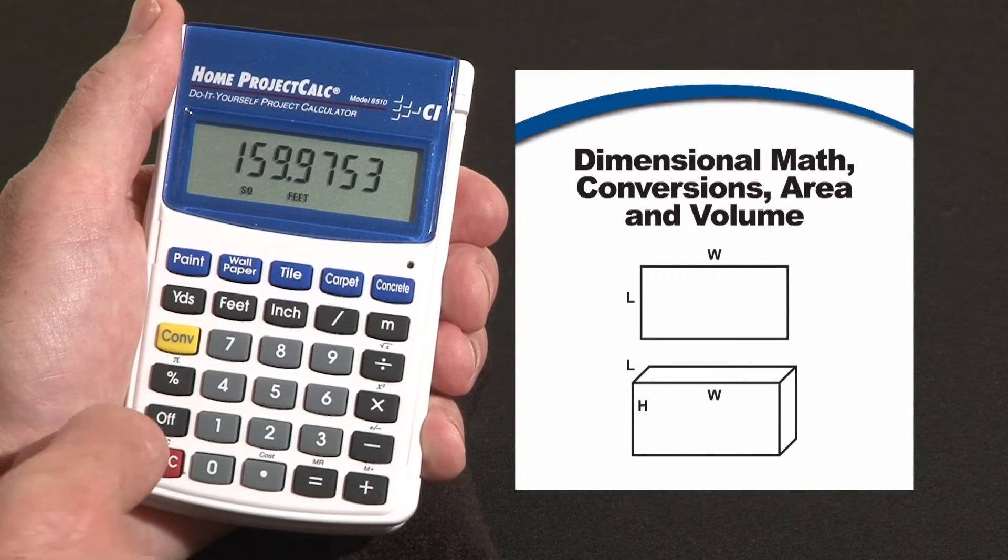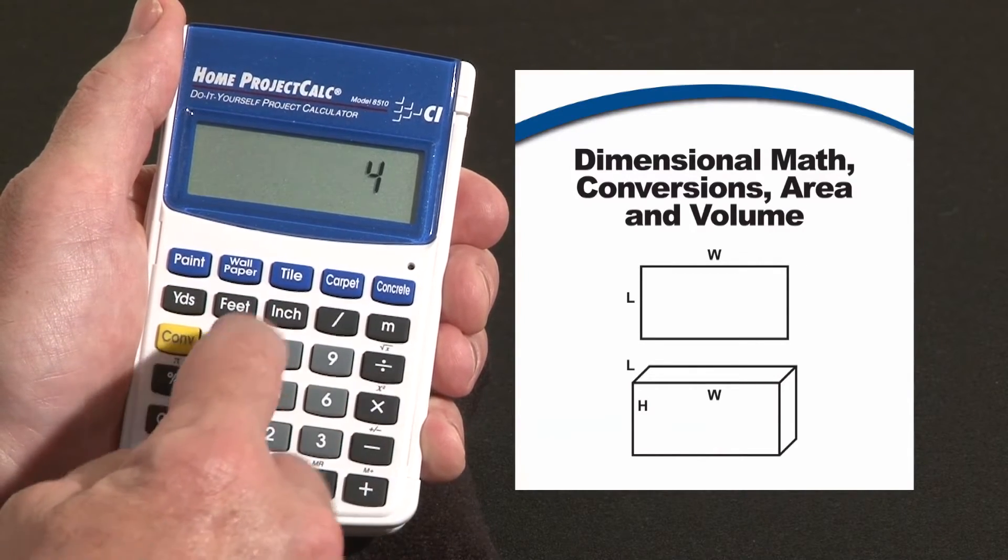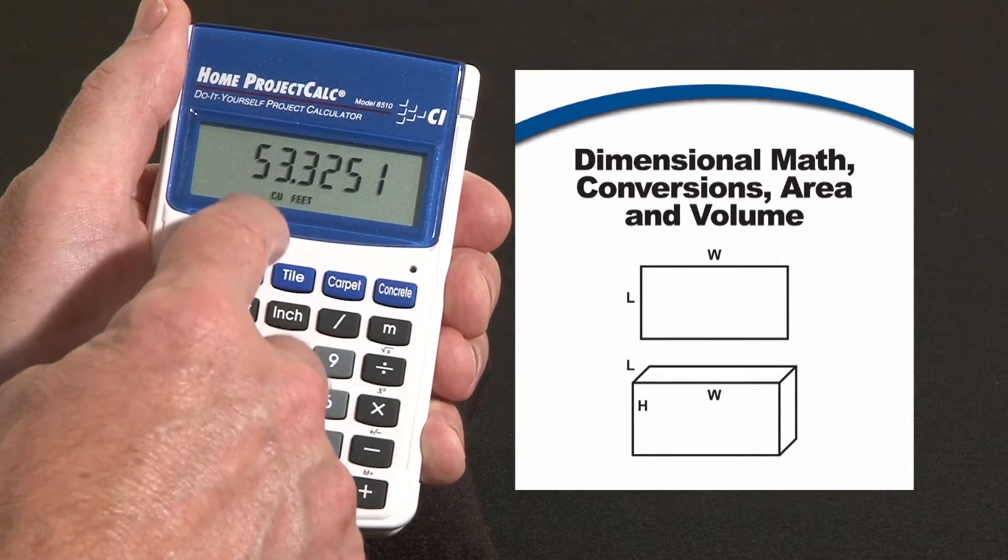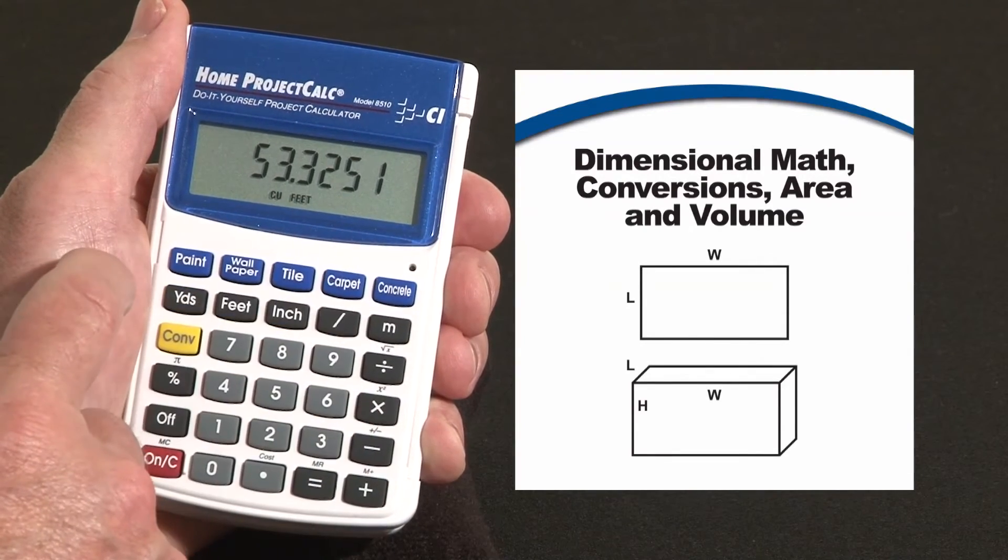Say you're going to pour this four inches deep. So we say times four inches, hit equals, and it would give you the number of cubic feet, fifty-three point something cubic feet.